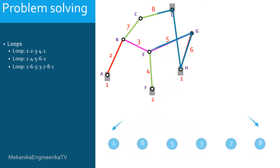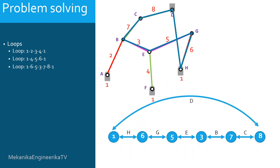There is a third loop made by links 1, 6, 5, 3, 7, and 8. Link 1 is connected to link 6 by pin H. Link 6 is connected to link 5 by pin G. Link 5 is connected to link 3 by pin E. Link 3 is connected to link 7 by pin B. Link 7 is connected to link 8 by pin C. The loop is closed by pin D connecting links 1 and 8.